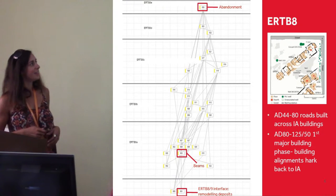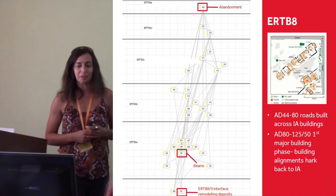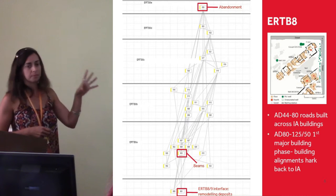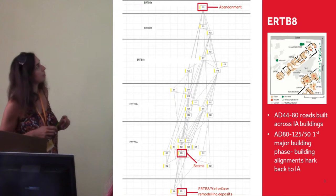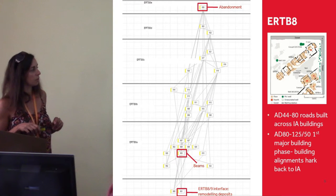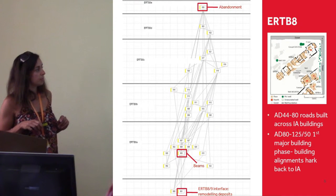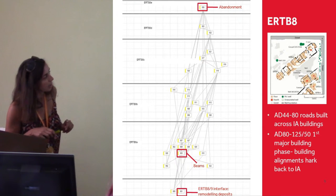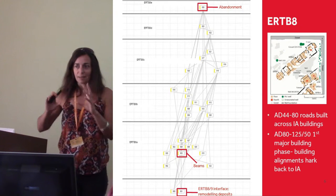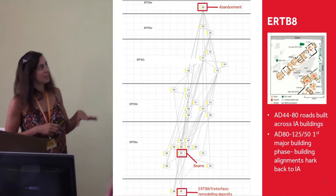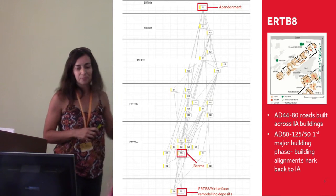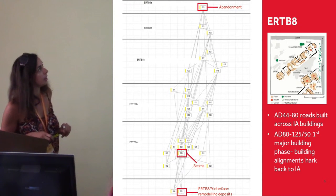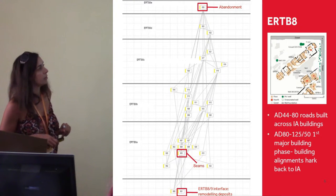This is the matrix of Early Roman Timber Building 8, developed digitally on the IADB — the Integrated Archaeological Database. You can see this building has several phases. This transition phase here represents the beam slots — each box is a set with its own matrix within it, so if you had the whole thing up it would take up the entire room, and it's been reduced. We also have the beam slots and then the abandonment of the building.